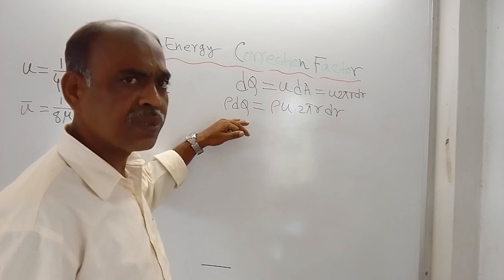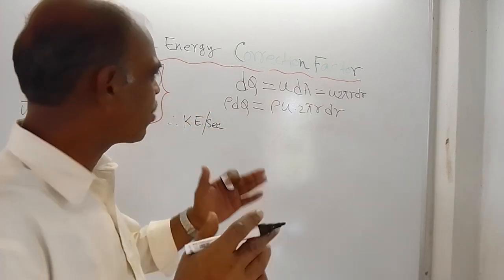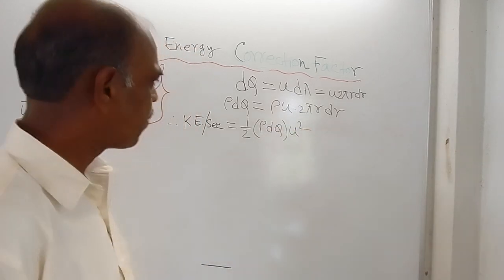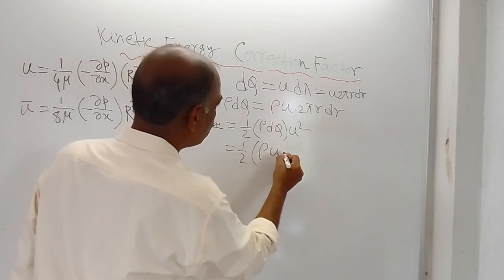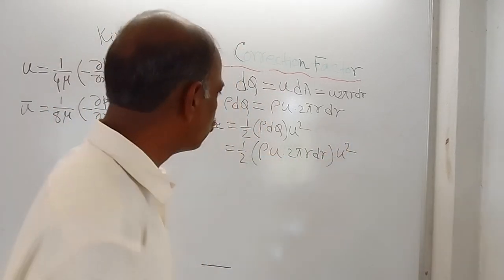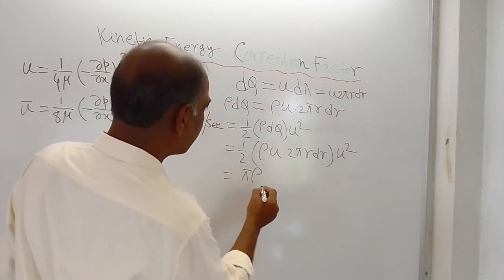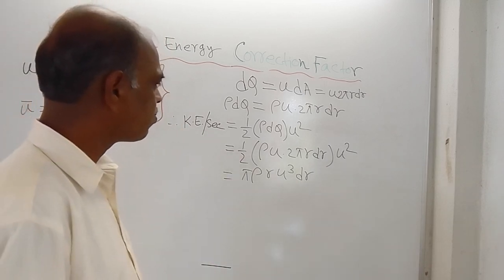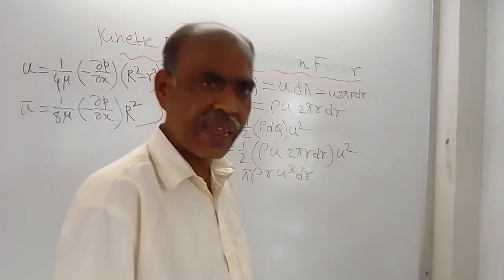Kinetic energy per second of the fluid flowing through the ring element based on actual velocity equals ½·ρ·dq·u² = ½·ρ·u·2πr·dr·u² = π·ρ·r·u³·dr. This is the kinetic energy per second for the ring element. To get the total for the entire cross section, integrate this expression from r = 0 to r = R.